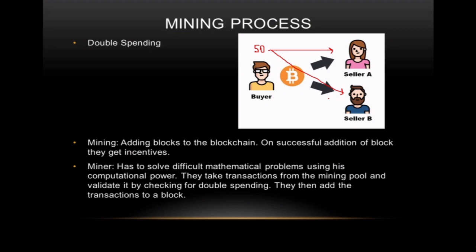They check for double spending by taking one transaction at a time. If double spending has occurred, the first transaction is taken and the next transaction for the same money will show the buyer's account as zero. Even though he has sent 50 dollars, his balance is zero, so that second transaction will fail.